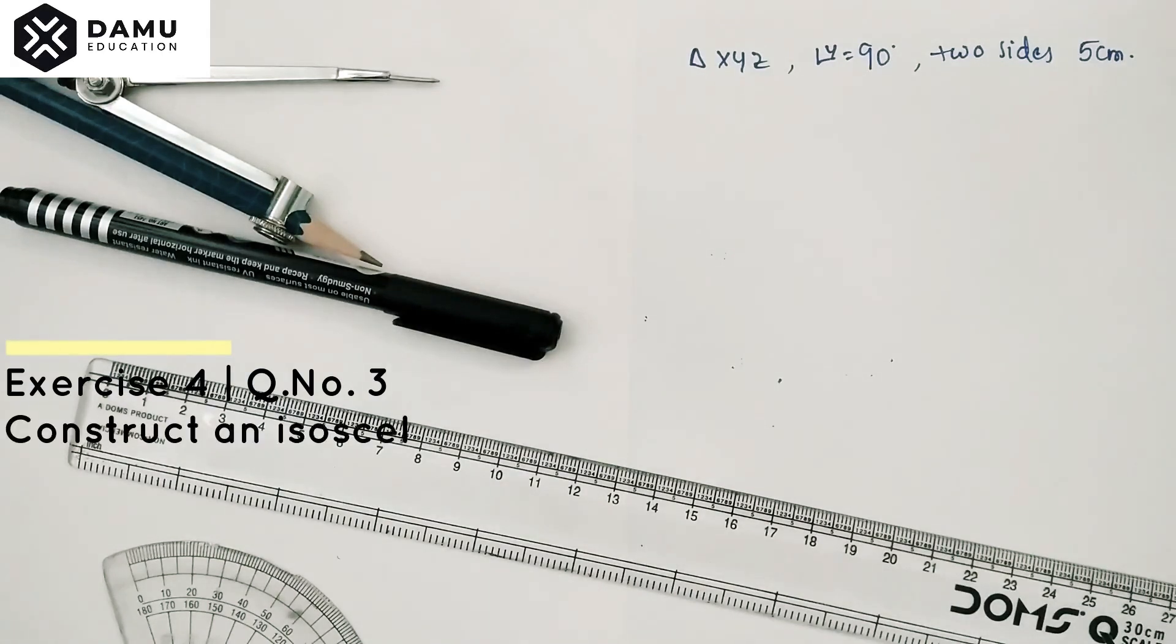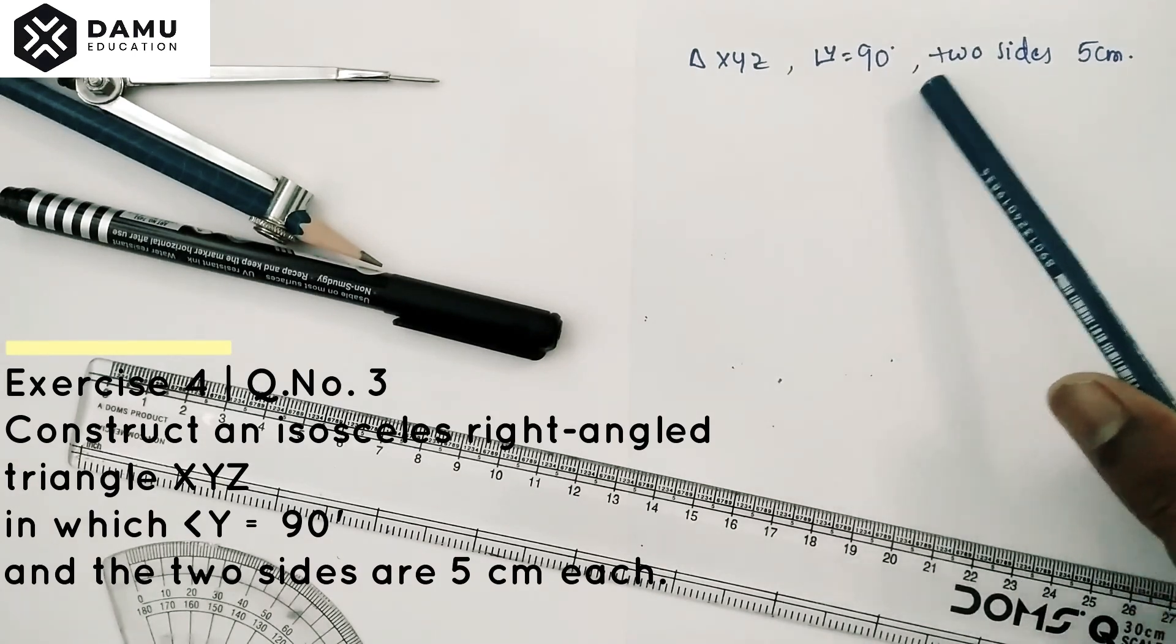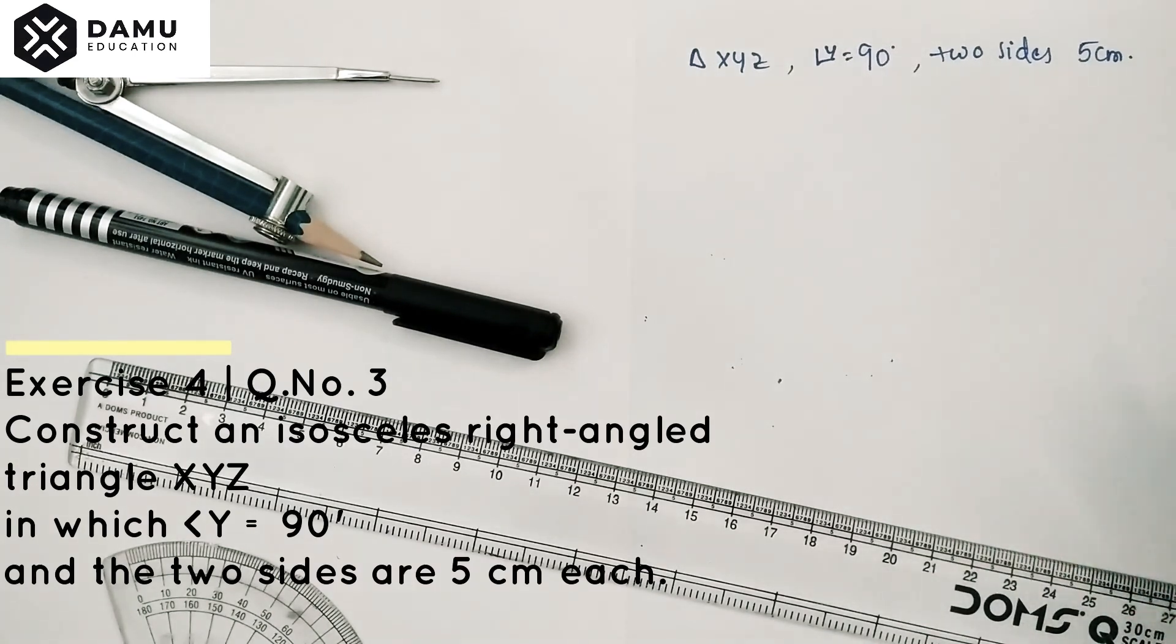Hello viewers, in this session we're going to discuss how to construct an isosceles right-angled triangle XYZ in which angle Y will be equal to 90 degrees and the two sides are 5 centimeters each.